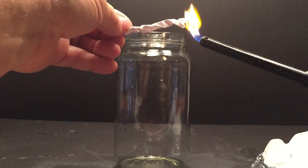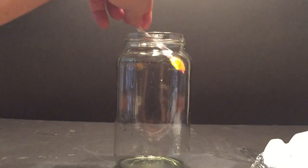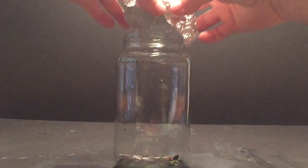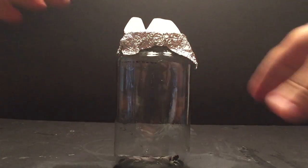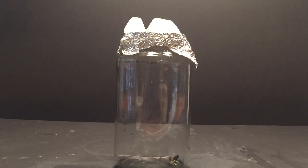Then very quickly put the foil lid back on the jar and seal it tightly, and keep the ice cubes on the top of the foil in the middle. Then you're going to observe what you see in the jar.